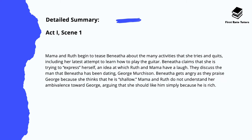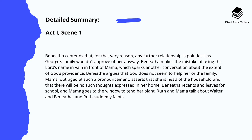Mama and Ruth then begin to tease Benita about the many activities she tries and quits, including her latest attempt to learn how to play the guitar. Benita claims that she's trying to express herself, an idea that Ruth and Mama have a laugh about. They discuss the man Benita has been dating, called George Murchinson. Benita gets angry as they praise George because she thinks he's shallow. Mama and Ruth don't understand her ambivalence towards him, arguing that she should like him simply because he's rich. Benita contends that for that very reason any further relationship is pointless, as George's family wouldn't approve of her anyway — they're not from the same social class.